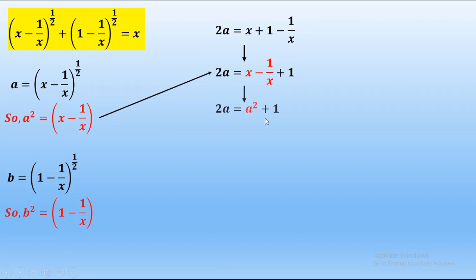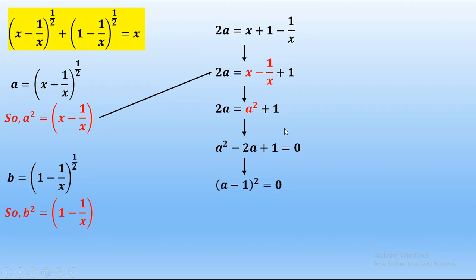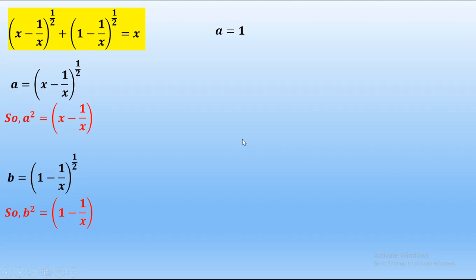Now x minus 1/x equals a², so 2a = a² plus 1. Bringing all the a terms together and writing in equation form, we obtain a² minus 2a plus 1 = 0, or (a minus 1)² = 0. So the value of a has two equal roots, both equal to 1. We will take a = 1.